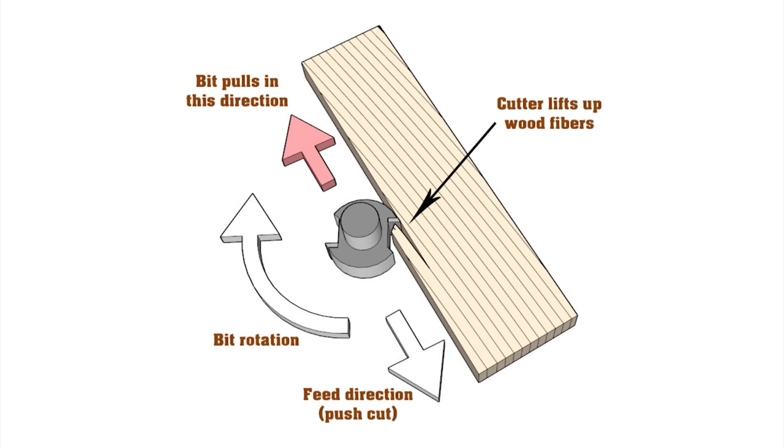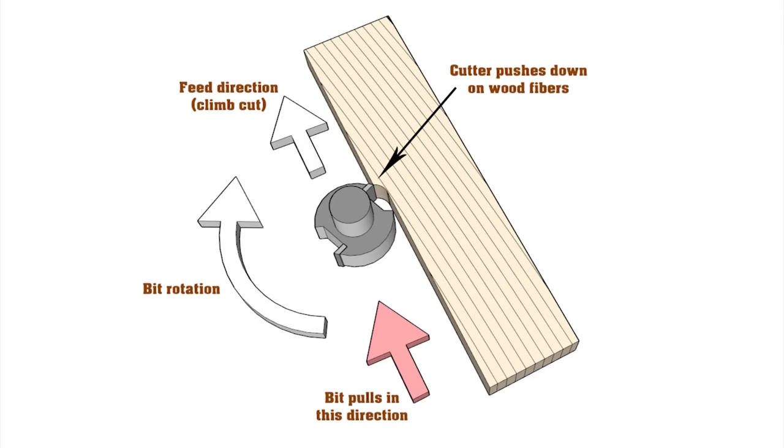Tear up can happen if the wood grain slopes toward the edge of a workpiece and against the rotation of the bit's cutters. In cases like that, the cutters may want to lever up the wood fibers, and that will leave a ragged or splintered edge. One way to prevent this is to reverse your feed direction so the cutters will engage the wood in a downward motion instead of levering them away.